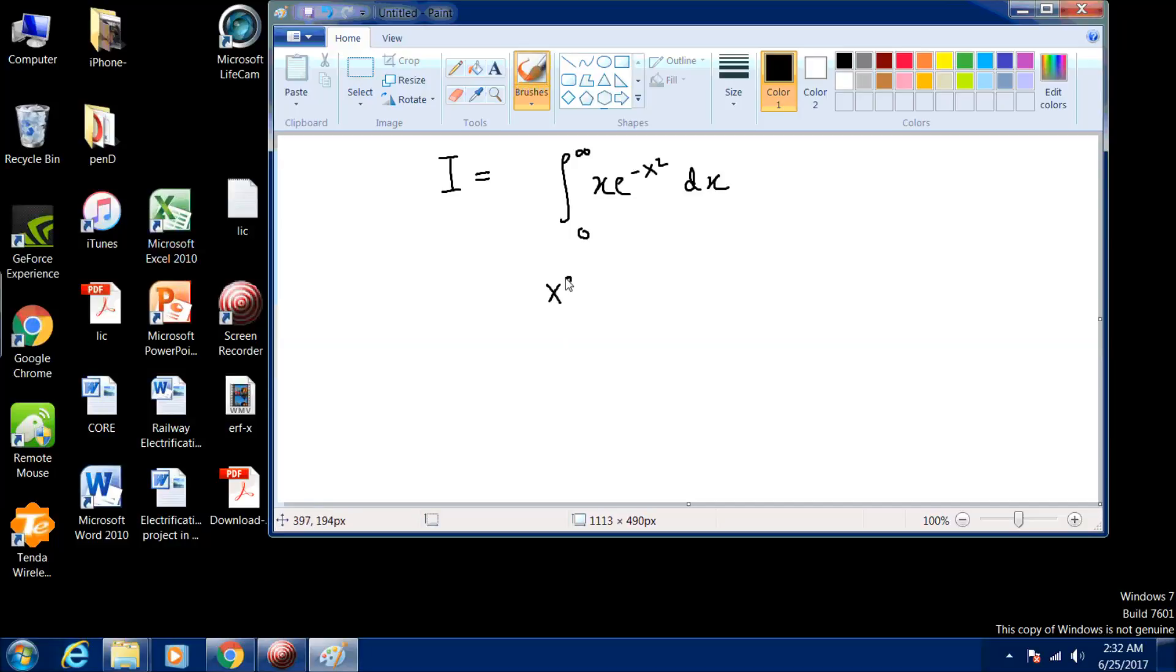We put x squared equal to t. From 0 to infinity, 2x dx equals dt.